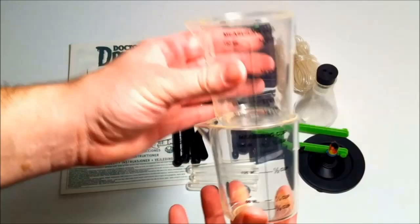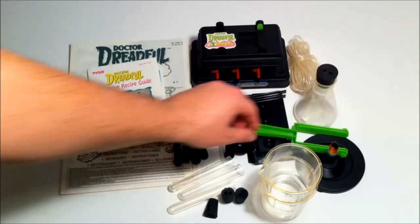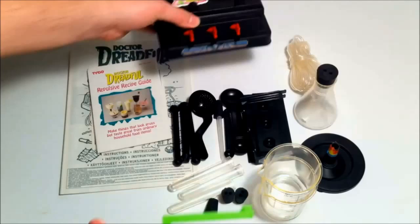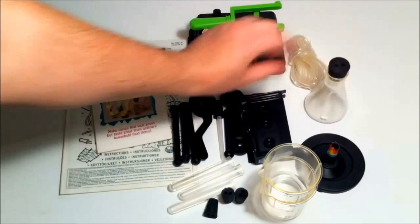We have our two beakers. Then we have our test tubes and a little stoppers down here that go with them. We have our lever that goes to the pump here, this little air pump.